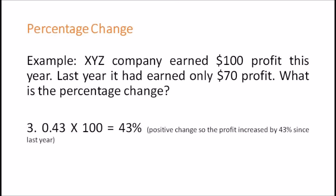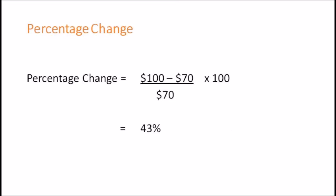Now if you had to just use the formula, this is how you'll use the formula: $100 is the new value, minus $70 the old value, divided by $70 which is the old value, and then multiply by 100.